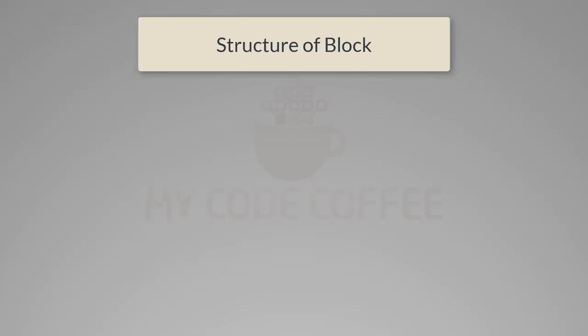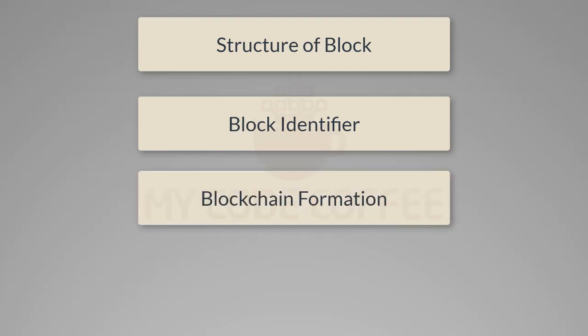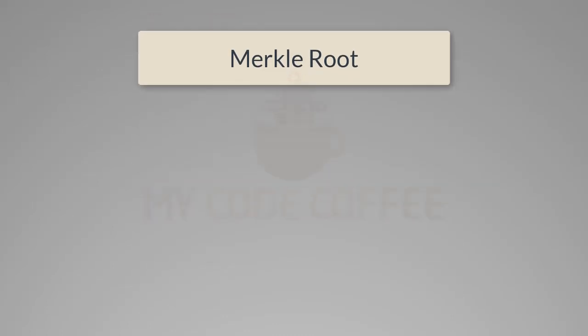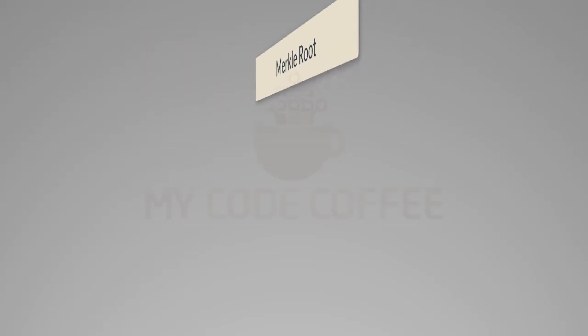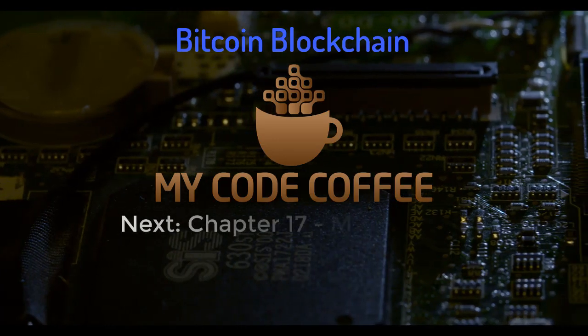So in this chapter we discussed the structure of a block, block identifiers, and how blockchain formation happens. We also touched upon Merkle Root and said that it is the summary of all transactions. But what does that mean and how does it summarize the transactions? We will see in the next chapter, which is dedicated to Merkle Tree and Merkle Root. See you there, and enjoy MyCodeCoffee.